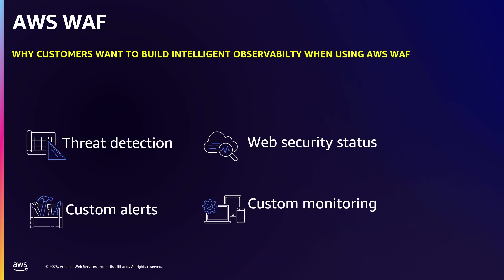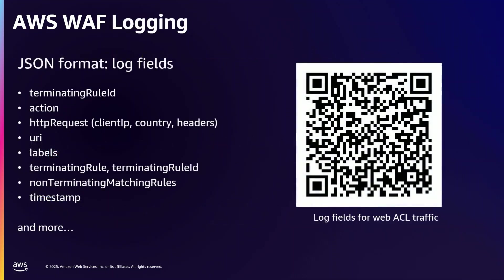When I speak with customers — and this could be some of the reasons why most of you are here — they want to use AWS WAF, but they want to be able to instrument it. They want to use it for things like threat detection, understanding their security landscape, and creating custom alerts and custom monitoring. What we're doing in this session is taking all those logs from AWS WAF and sending them to a destination where we'll create dashboards.